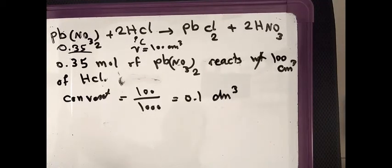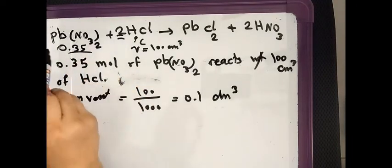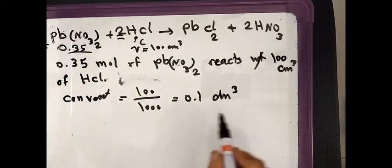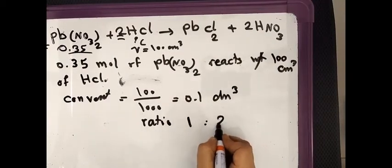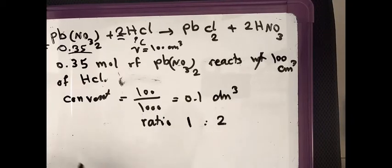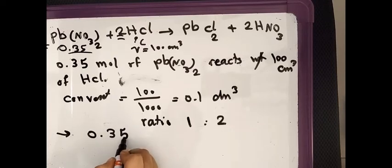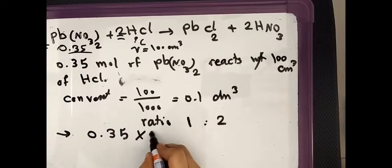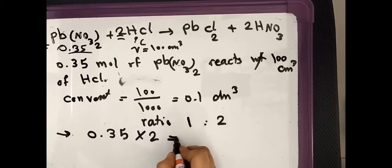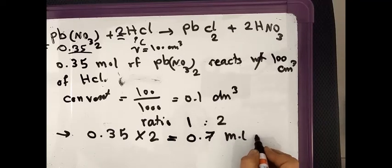In step 2, find the mole ratios. For each one mole of Pb(NO₃)₂, we have two moles of HCl, so the mole ratio is 1:2. That means 0.35 moles of Pb(NO₃)₂ should be doubled — multiplied by 2 — to give us the number of moles of HCl.